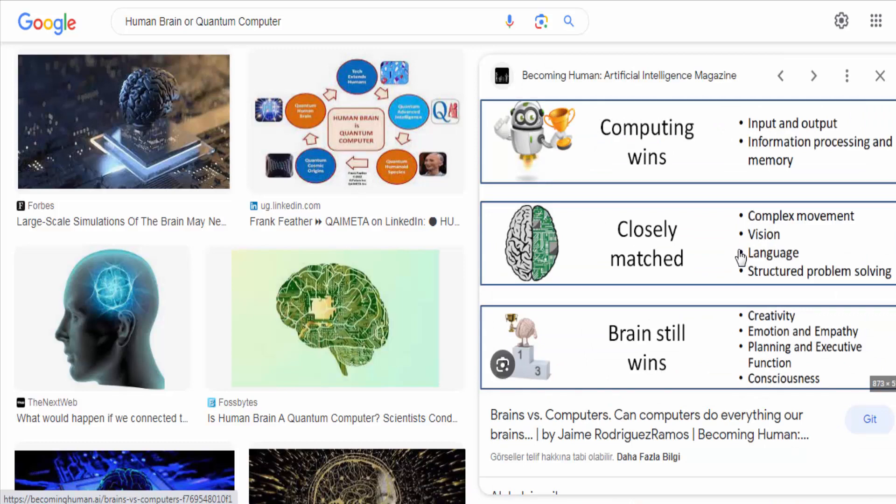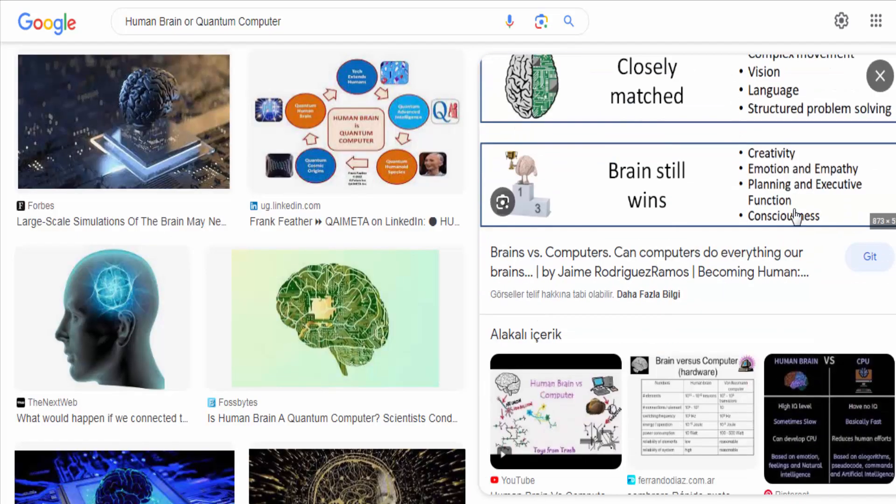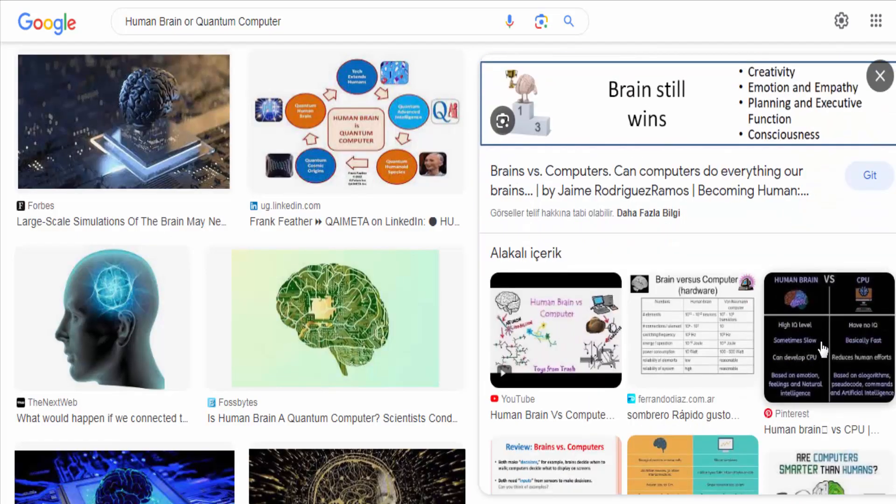Unlike classical computers that use bits to represent information as either a zero or a one, quantum computers use quantum bits, or qubits, which can exist in multiple states simultaneously thanks to a property known as superposition.